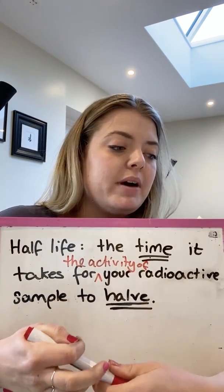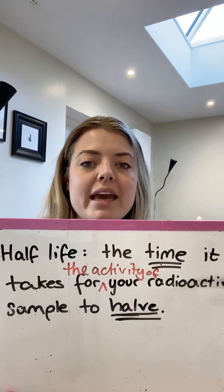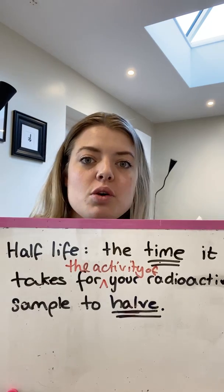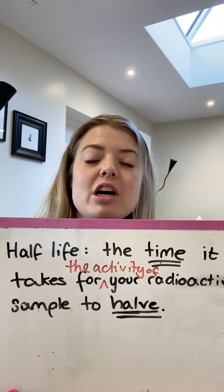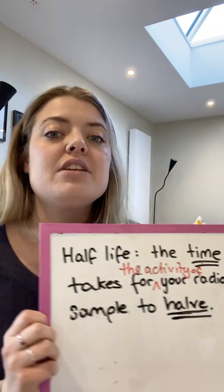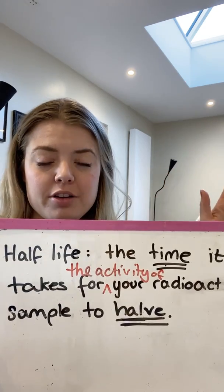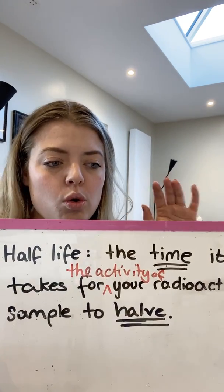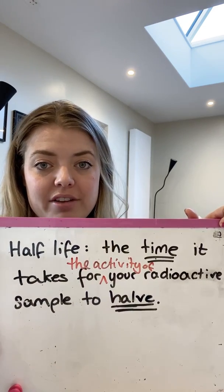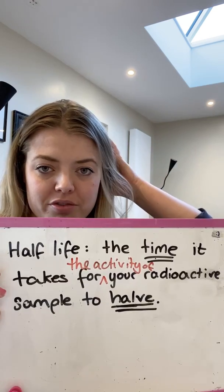So Half-Life becomes: the time it takes for the activity of your radioactive sample to halve. If you started with a Geiger counter reading of 100 counts per second, your half-life would be the length of time it took to go down to 50 counts per second. This rule applies no matter what element you're investigating — all radioactive samples decay with a constant half-life. It's one of the fundamental rules of radioactivity.